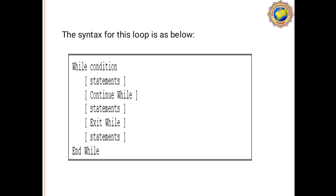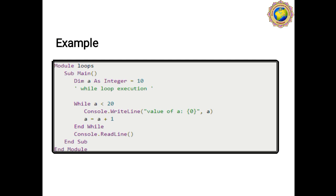Here is the syntax for the While loop in VB.NET. First, use the keyword 'While', then give a condition, then statements, then 'Continue While', then more statements, then 'Exit While', and finally 'End While'. The 'End While' is the exit statement of the control loop. Here is an example — first declare a variable with its data type and initialize it.